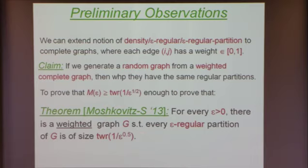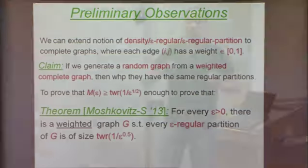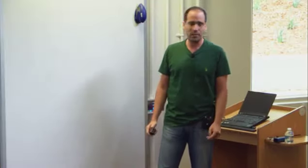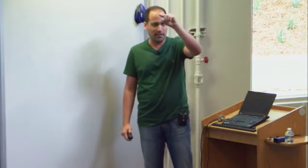Any questions so far? A weighted graph is just a complete graph where I assign every edge some real number between zero and one. Generating a random graph simply means taking an edge with probability equal to its weight — I put an edge with a probability given by the number written on that edge.